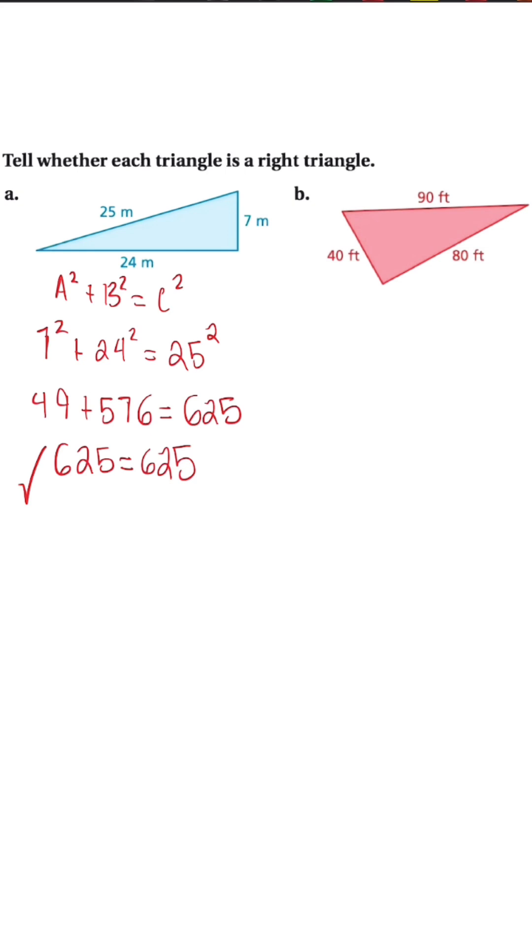Now when we go over to our second triangle and repeat the process, we have 40 squared plus 80 squared is equal to 90 squared. Once we simplify again, we're going to get 1600 plus 6400 is equal to 8100.